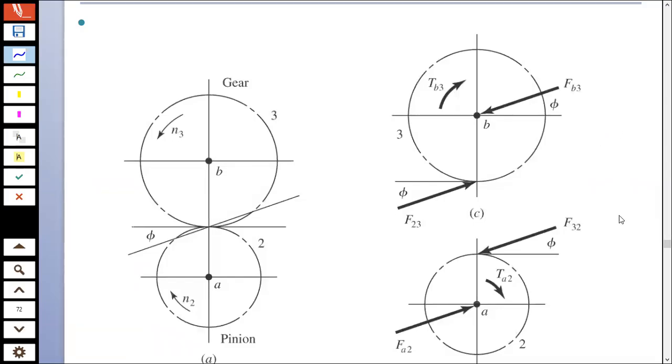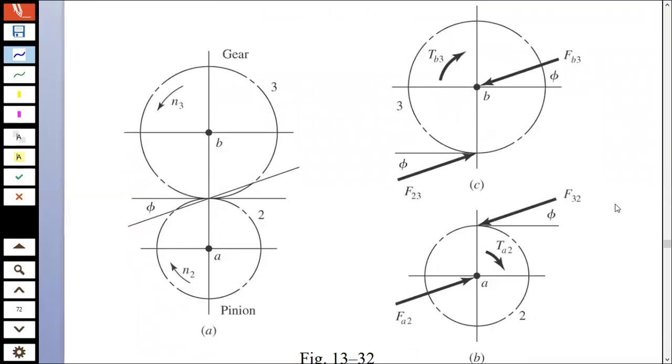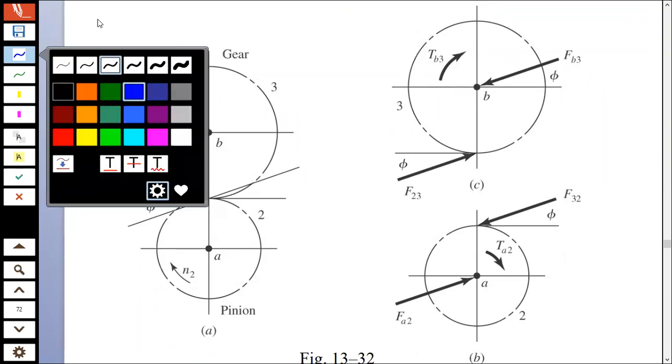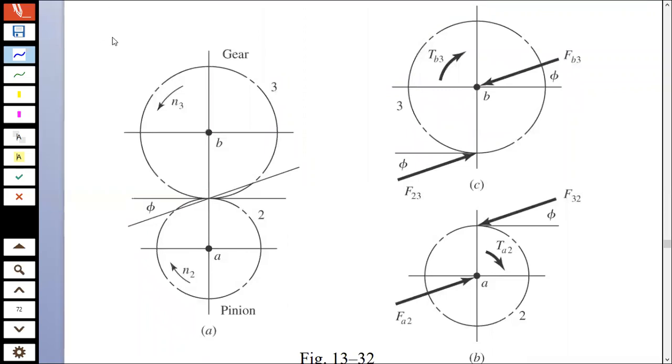So for force analysis, let's say simply now what we are going to do is we are going to define some rules. First of all, how do we label gears? We start from gear two. Gear two is always the pinion. The pinion is the smallest gear or it is the gear that provides the power. It is used as your first gear. You can call it gear two, whatever you want to call it.